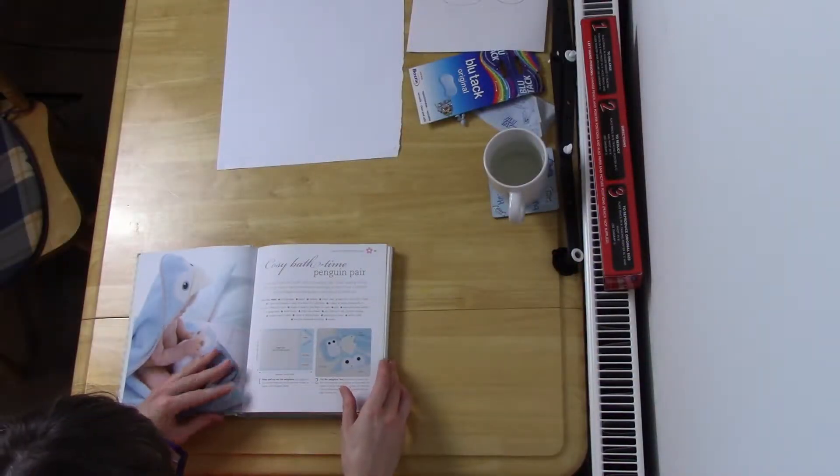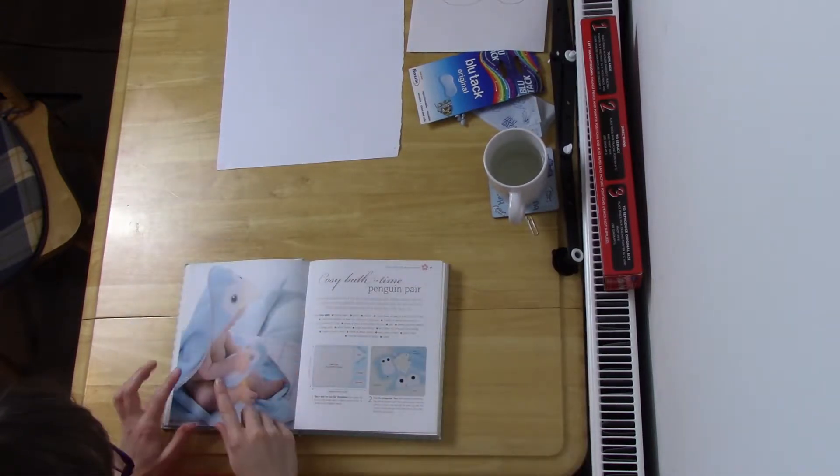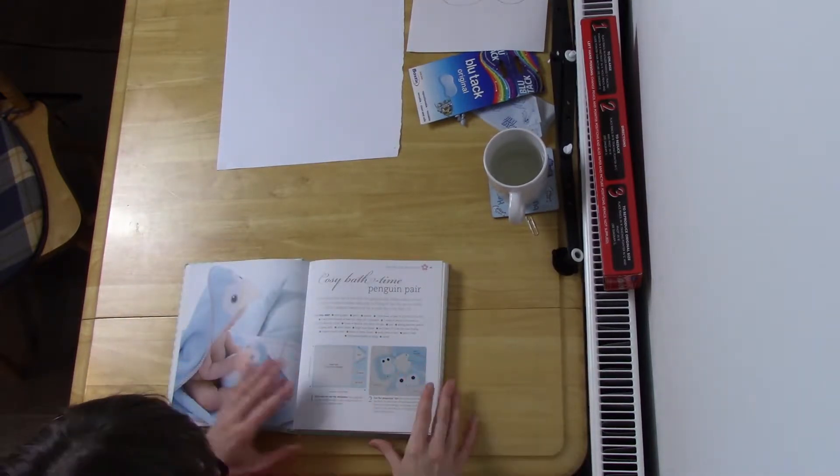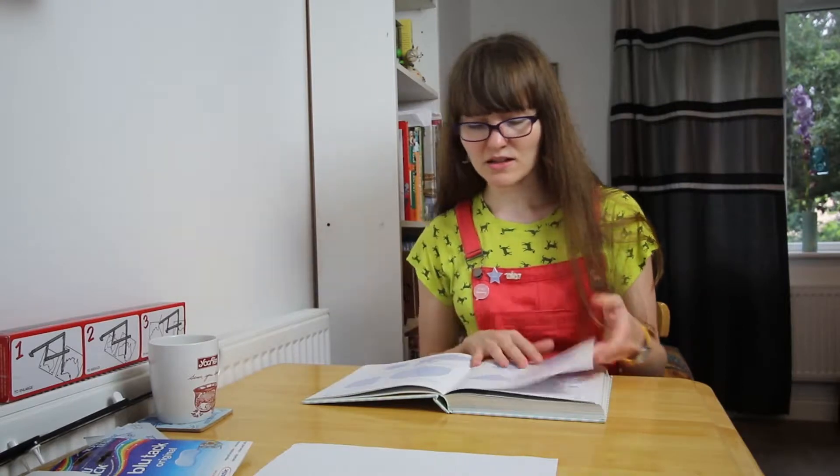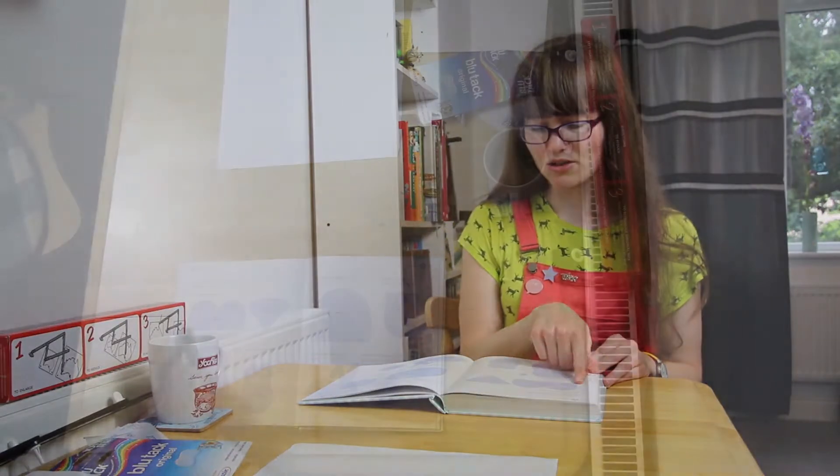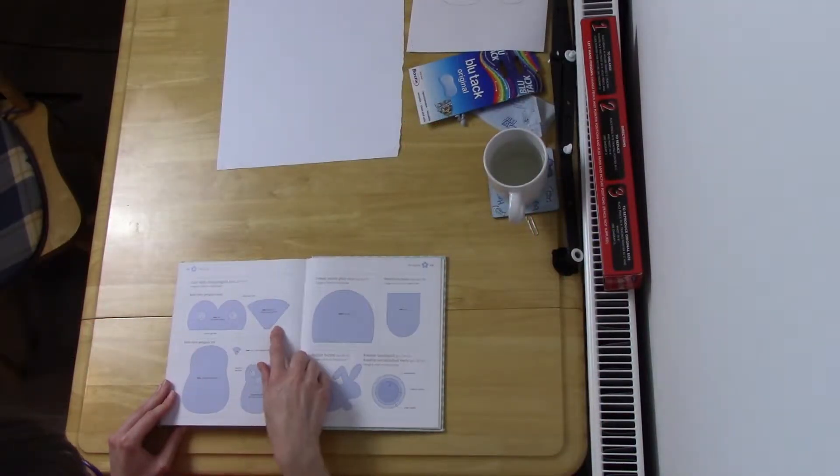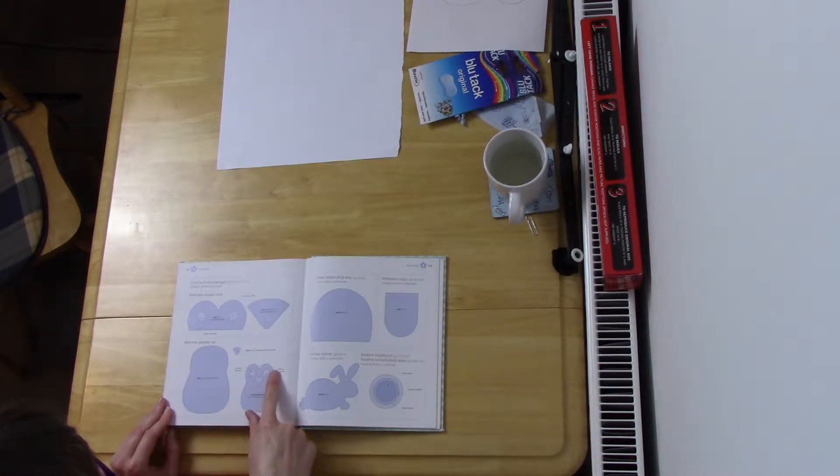I'm making the Cozy Bath Time Penguin Pair. It involves, there aren't too many pattern pieces but in the back of the book you have to enlarge by 200% and you've got the section at the top for the eyes and there's also the beak and then you've got the Bath Time Penguin toy so you've got the body and then the detail on the front of the penguin.